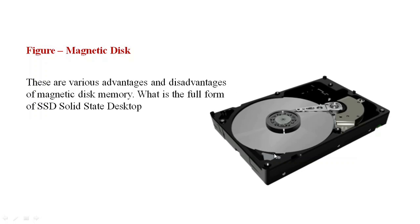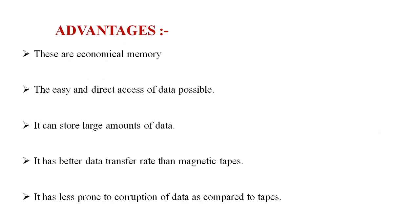There are various advantages of magnetic disk memory. Magnetic disk is economical memory. It provides easy and direct access of the data. It can store a large amount of data. It has a better data transfer rate than magnetic tapes. It has less corruption of data as compared to tapes. These are the advantages of the magnetic disk.